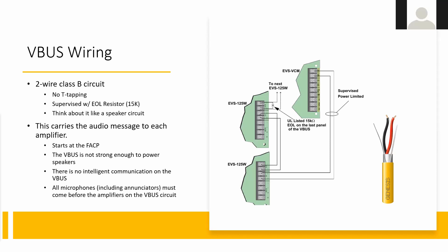On a recent job, we had an issue where one wire carried the VBUS going from the panel to a microphone, and then we also went from the panel to other amplifiers. To avoid pulling extra wire, we used the VBUS out from the microphone at the annunciator, pulled it to the VBUS in of the fire alarm control panel, and then went from the VBUS out on that panel to all the amplifiers. It still hit both microphones — the one at the enunciator and the one at the panel — and then went to the amplifiers. By keeping microphones first and amplifiers last, it worked correctly.